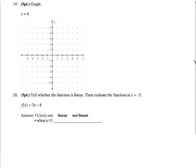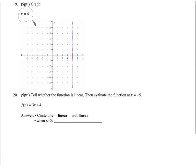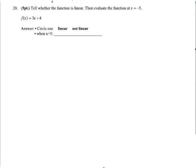Graph x = 4 — a tricky one. People sometimes recognize it as a vertical or horizontal line but aren't sure which. The graph is all points where x equals 4: here x is 4, and anywhere along this vertical column x is 4. Only along this vertical line is x equal to 4 — y doesn't matter. So we just draw a vertical line where all points have x = 4.